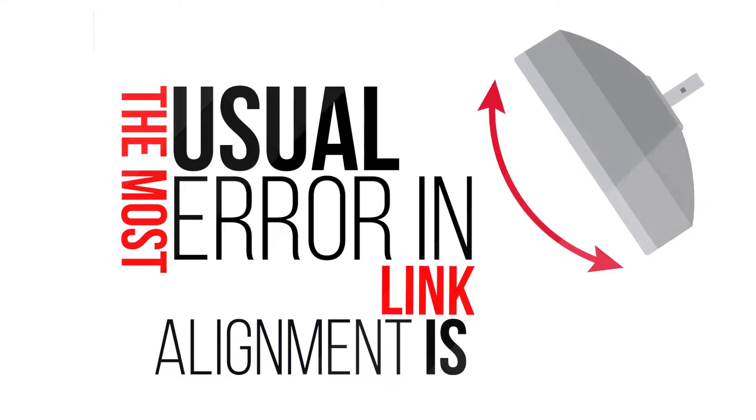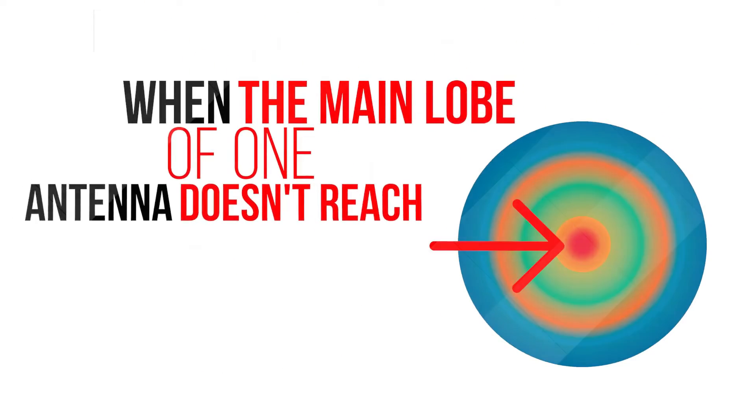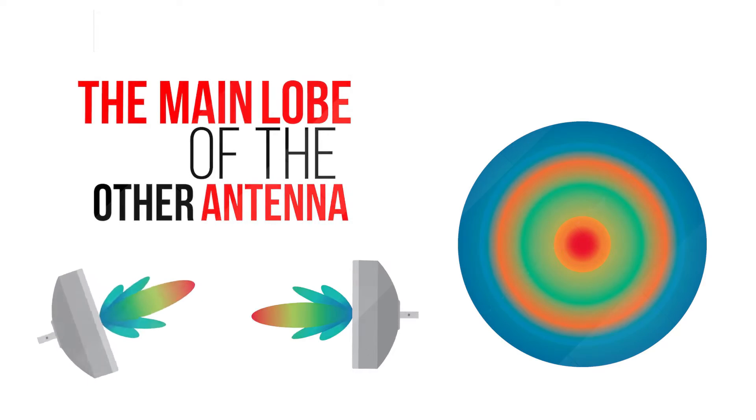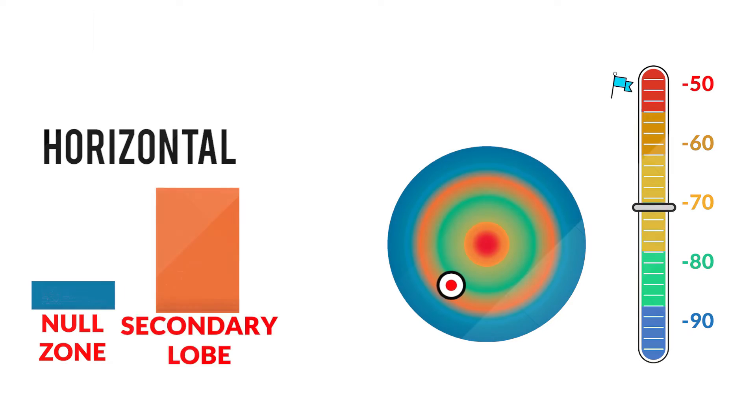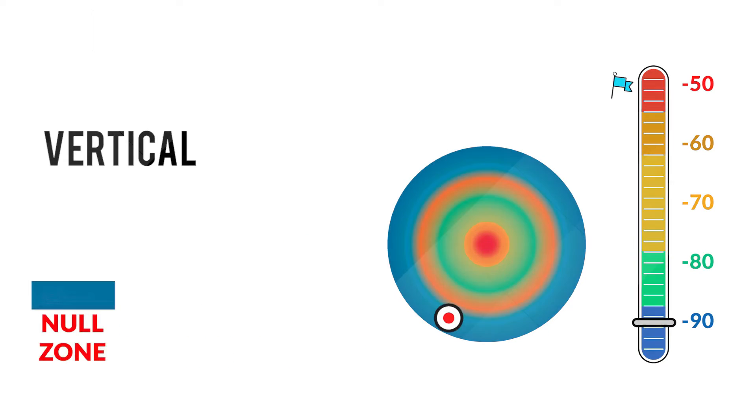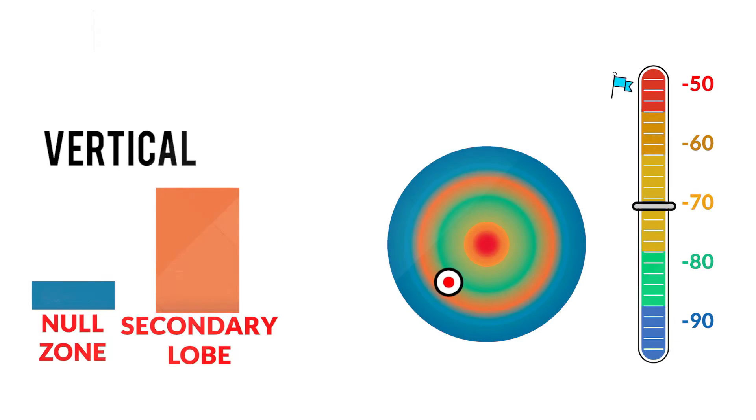The most usual error in link alignments is when the main lobe of one antenna doesn't reach the main lobe of the other antenna. Pay attention to the examples: the antenna main lobe reaches the null zones and secondary lobes, but it doesn't reach the main lobe of the other antenna. This occurs both horizontally and vertically.